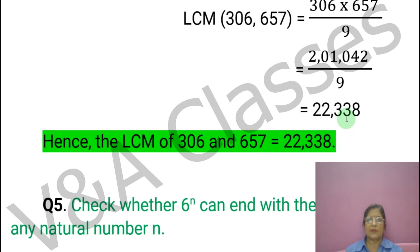Finally, we write the statement: Hence the LCM of 306 and 657 equals to 22,338.